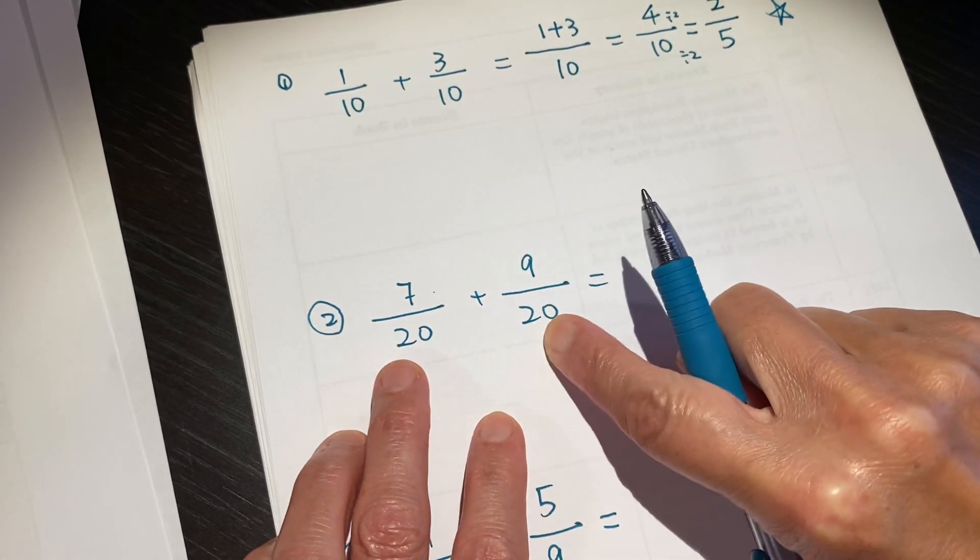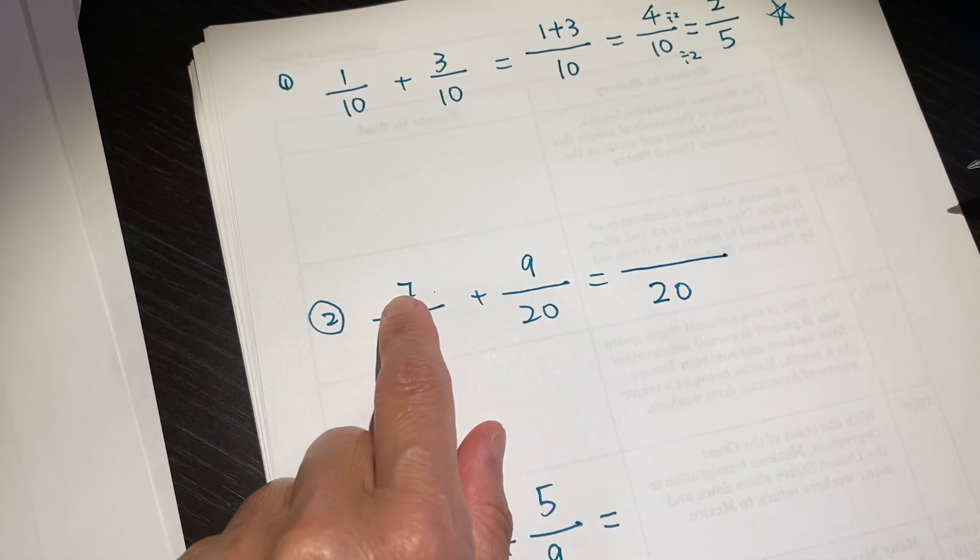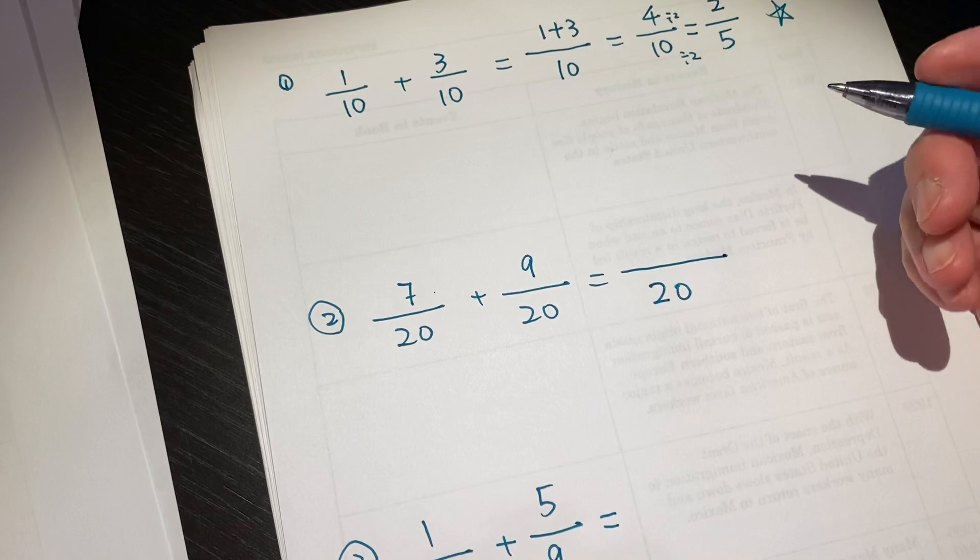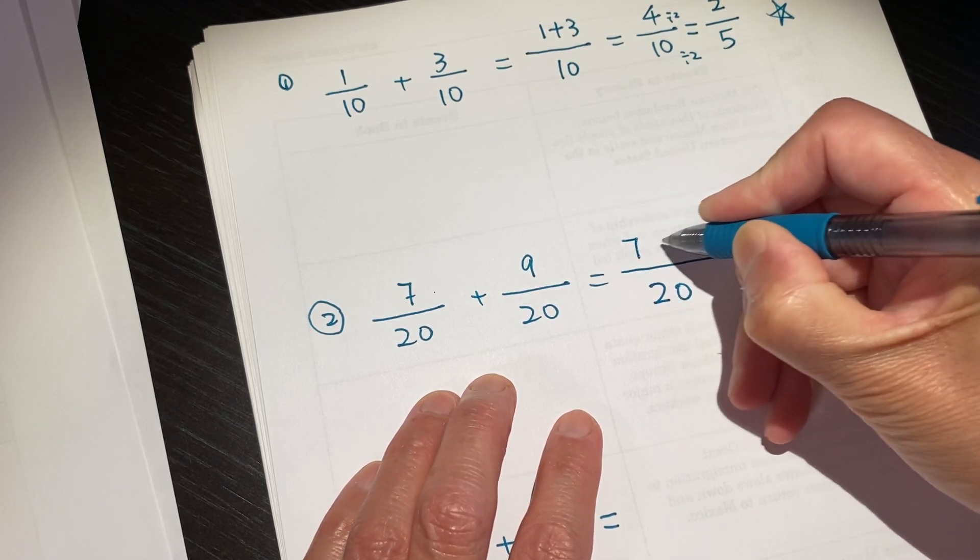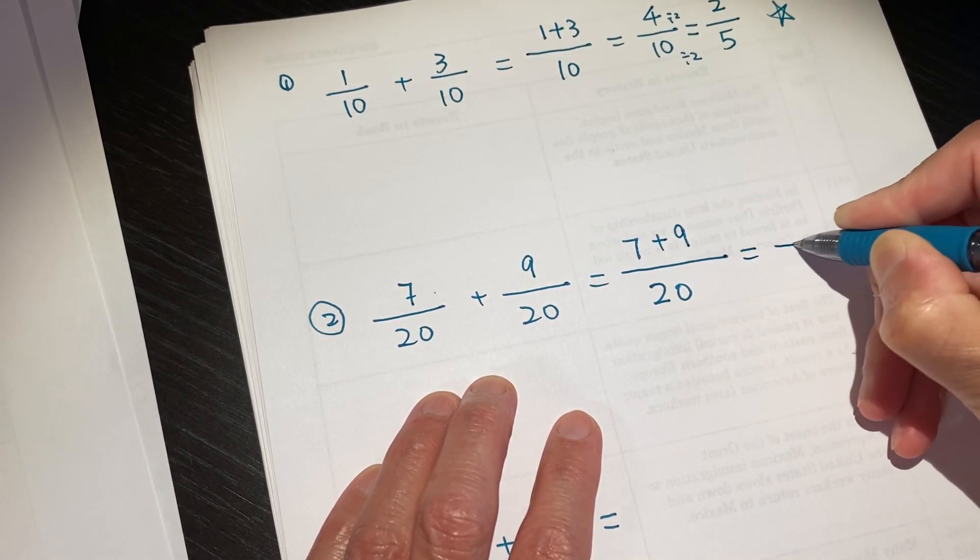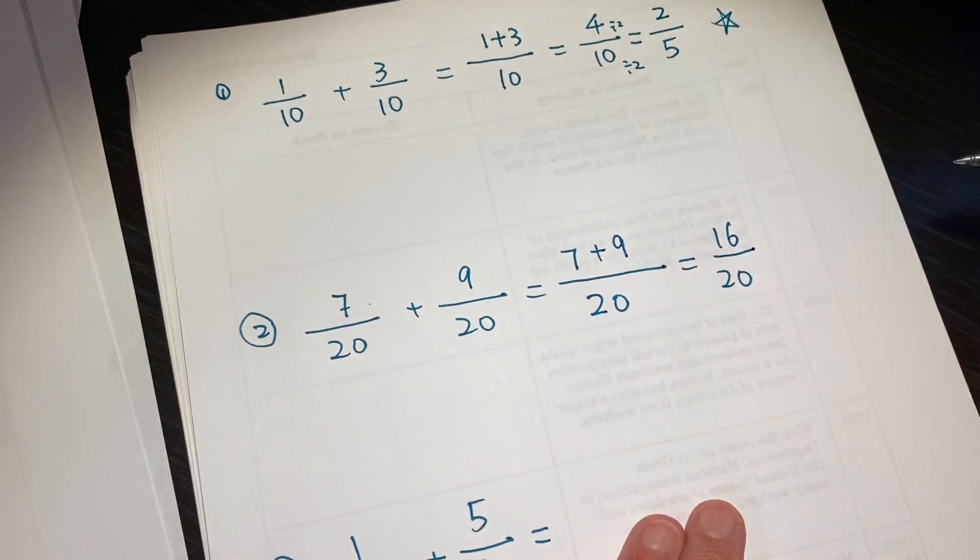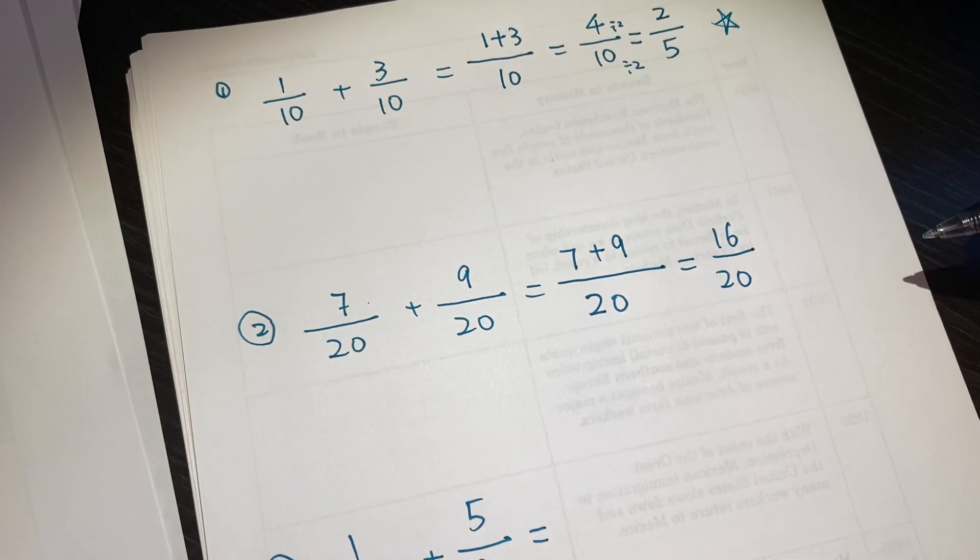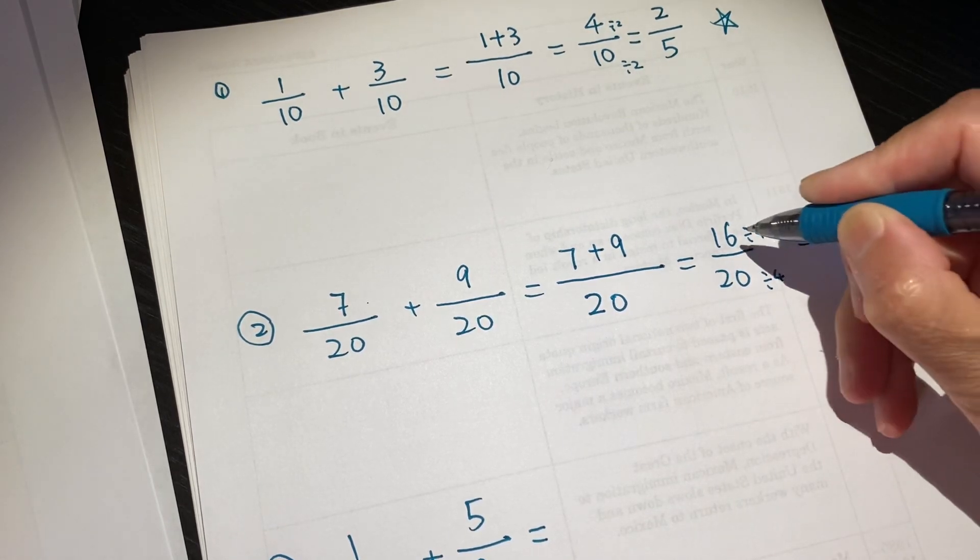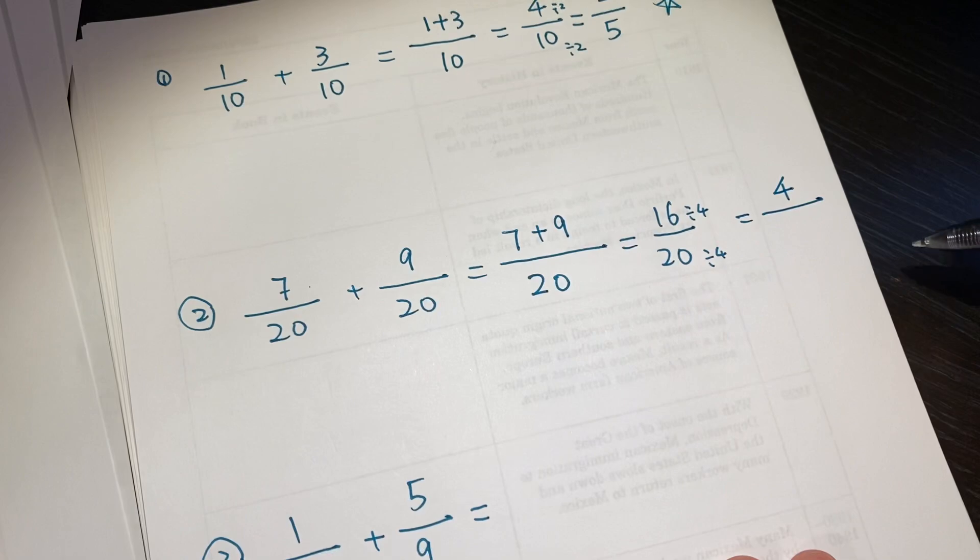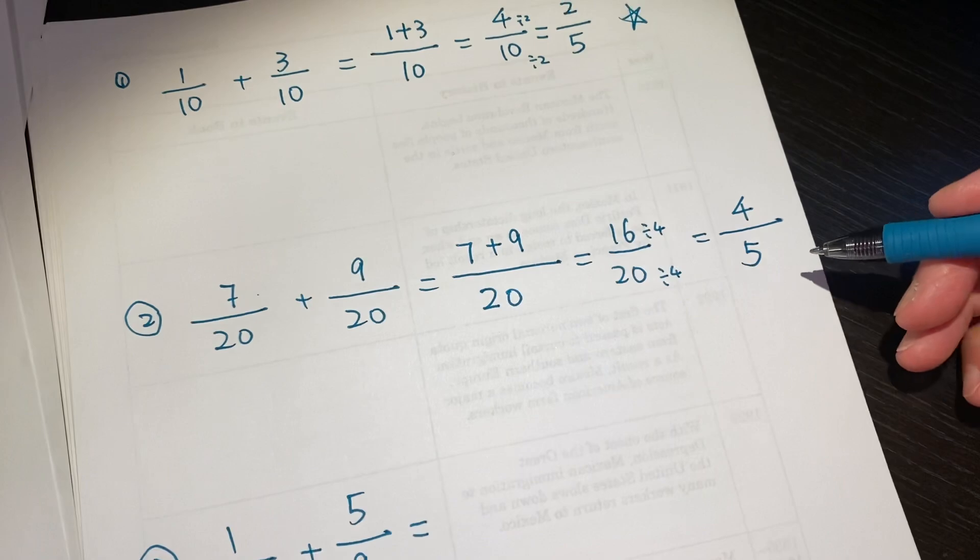So the denominator is the same, bottom is the same. So we can just copy it. And the top number, we can just add together and get the result. You can write 16, or you can write 7 plus 9, which is 16 over 20. And both can be divided, at least can be divided by 4, right? So 16 divided by 4 is 4, 20 divided by 4 is 5.